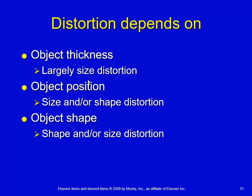Object position is clearly going to be a foreshortening issue. Object shape can either be a size or shape distortion issue. A size distortion issue would occur if you had a triangular anatomy — thin on one end and thick on the other. If the fattest portion is in direct contact with the image receptor, you wouldn't really have magnification. But if the thin end is closest to the image receptor and the fattest end is elevated, then you're going to have some magnification of the back side of that structure.